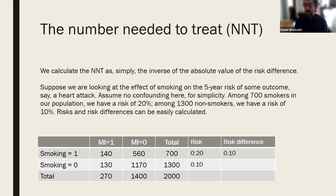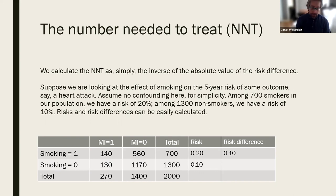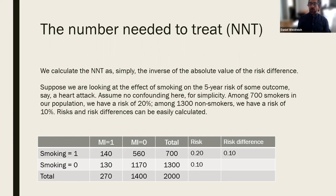To jump into a motivating example, I want to start by talking about the number needed to treat, which is a fairly simple epidemiologic idea that often gets taught in the first semester of a methods class. Most of you are probably familiar with the number needed to treat, which is calculated as the inverse of the absolute value of the risk difference.